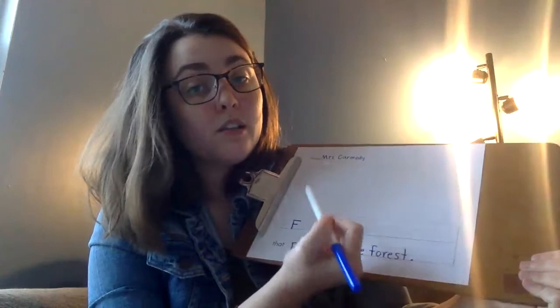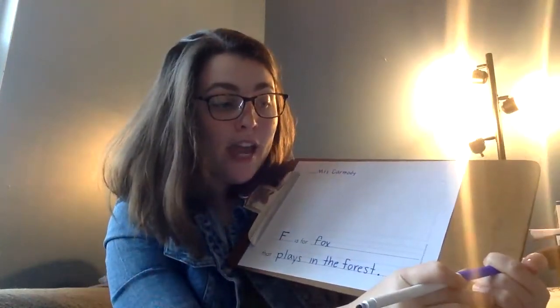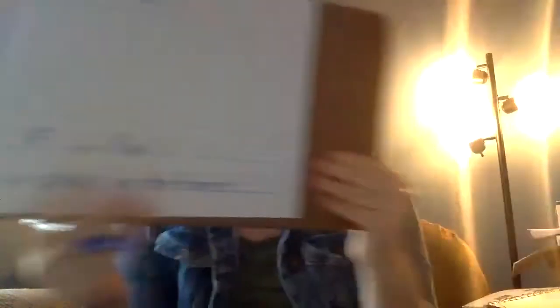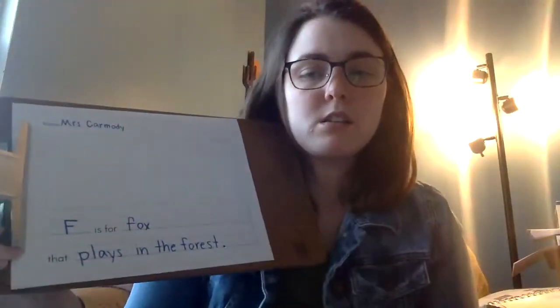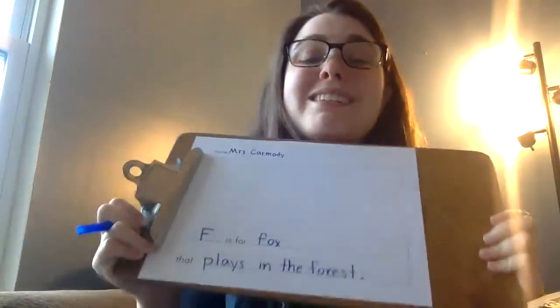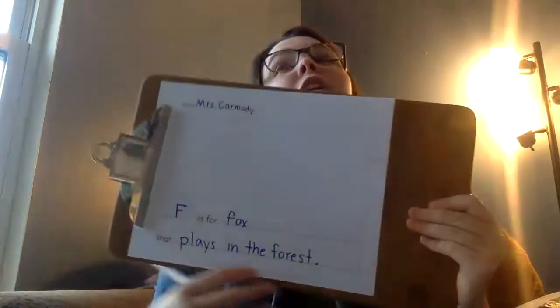Now in my box I am going to draw a picture of a Fox. I'll look at my sentence — 'F is for Fox that plays in the forest' — and I'm going to use the clues, or the words in my sentence, to make picture clues, like how we use them whenever we're reading. So if the Fox is in the forest, I should draw a forest, not a swimming pool or the beach.